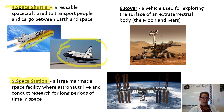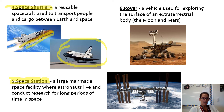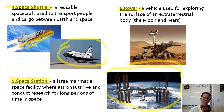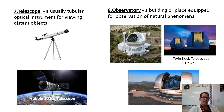The next word is space station — a large man-made space facility where astronauts live and conduct research for long periods of time in space. Here you can see a picture of a space station. Last on this slide is rover — a vehicle used for exploring the surface of an extraterrestrial body like the moon or Mars. We just landed another rover on Mars not too long ago, which was super cool. If you didn't see anything about it, you need to go search it up.